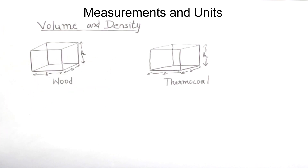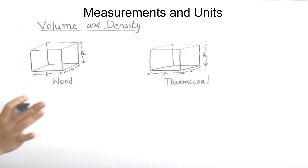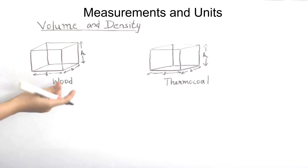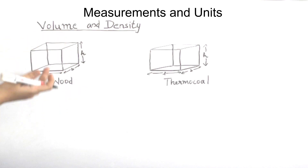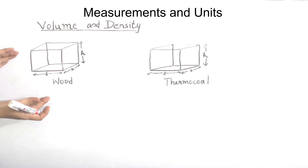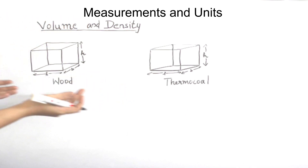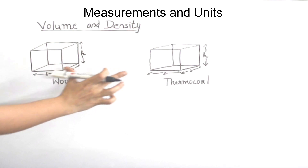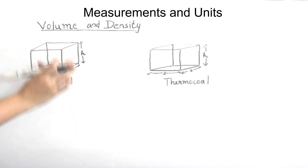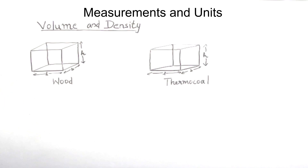Two objects can have the same volume. For example, a wood block and a thermo-col can have the same size and volume, but thermo-col is very lightweight. This introduces the concept of density.